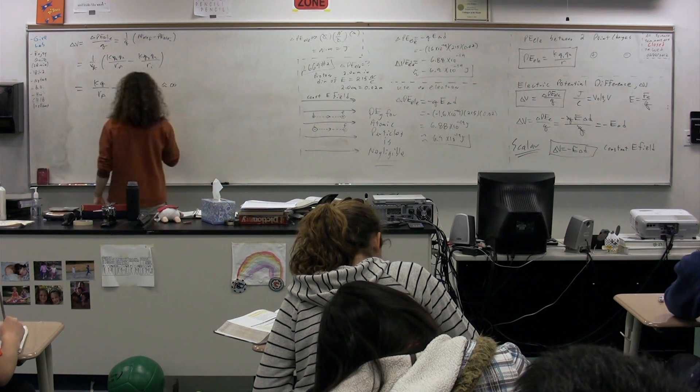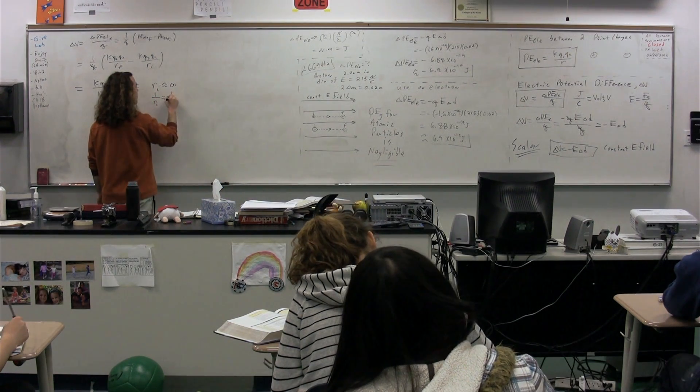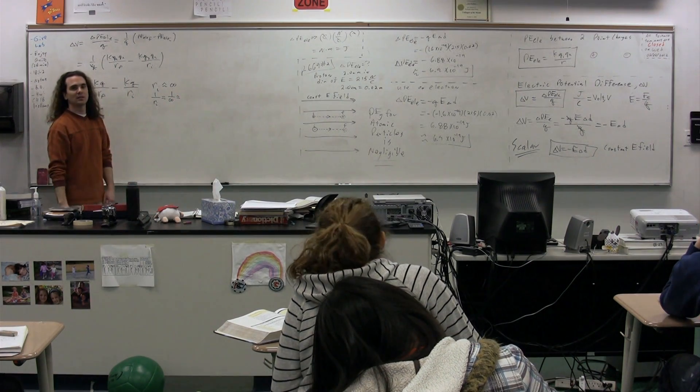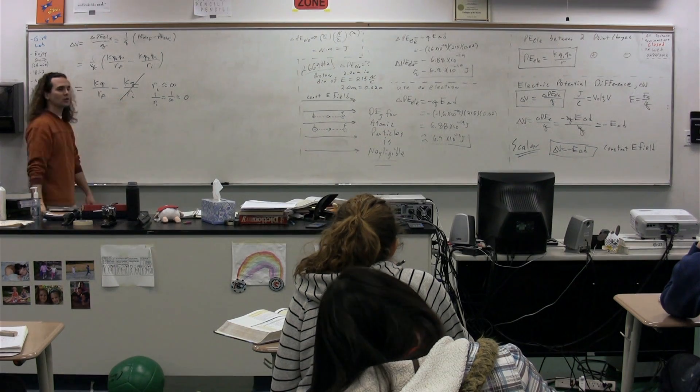Which means 1 over R initial, which is then going to be equal to 1 over infinity. Class, 1 over infinity is approximately 0. It's like setting a 0 line. This whole piece goes to 0.